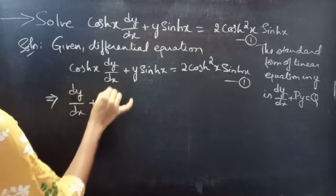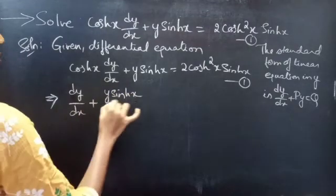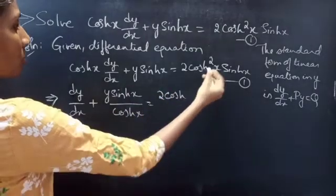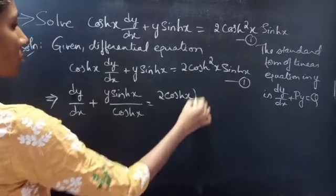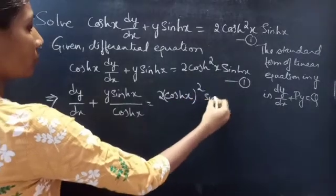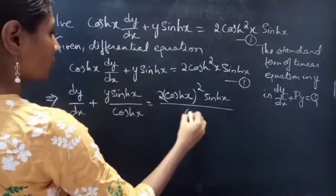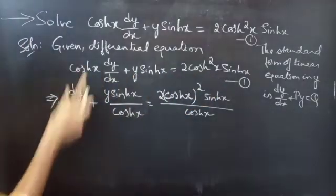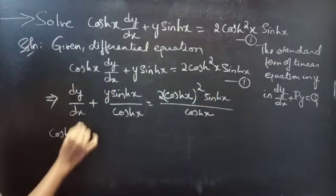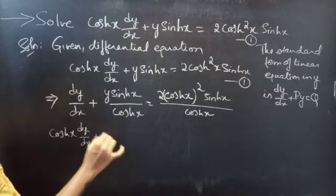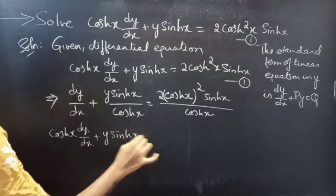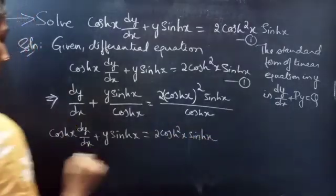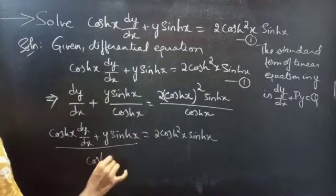dy by dx plus y sin Hx by cos Hx equals to 2 cos H square x — you can write 2 cos H square x as 2 cos Hx whole square — into sin Hx by cos Hx. Or simply, you can divide the whole equation by this coefficient: cos Hx into dy by dx plus y sin Hx equals to 2 cos H square x sin Hx by cos Hx.